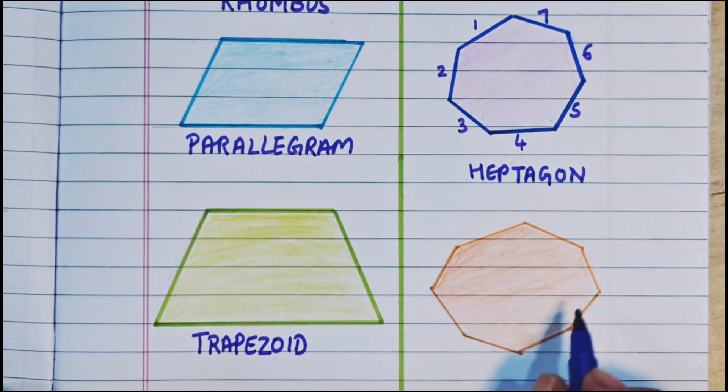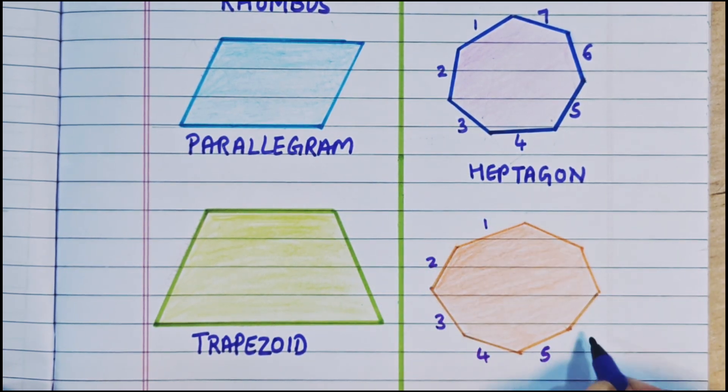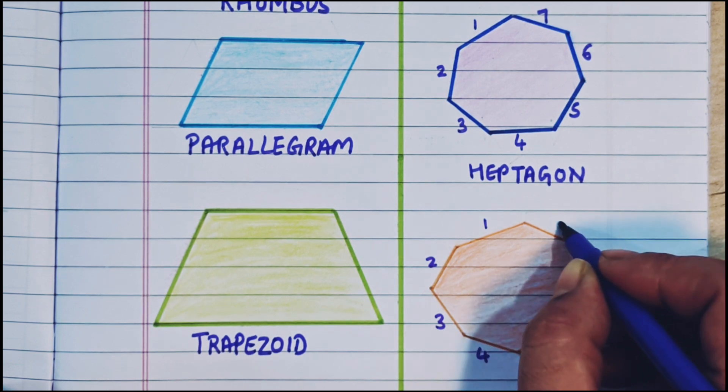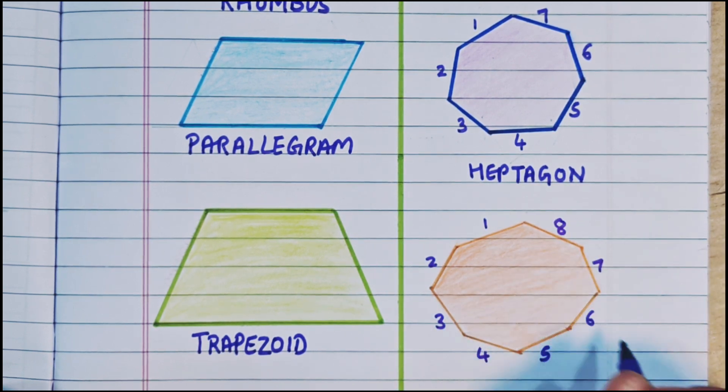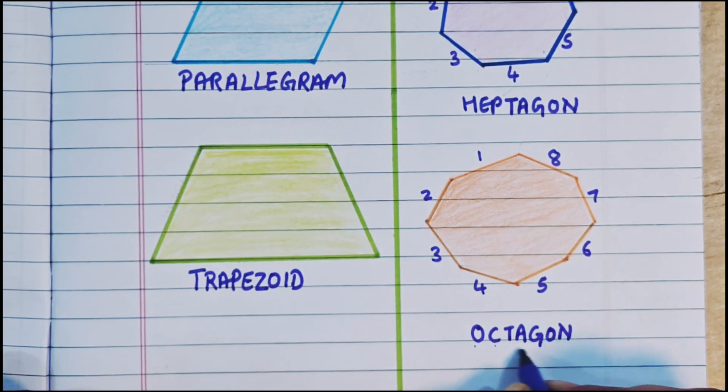Now next shape. Let's see how many sides. 1, 2, 3, 4, 5, 6, 7, 8. 8 sides it is having. So it is an octagon. Octagon. O-C-T-A-G-O-N. Octagon.